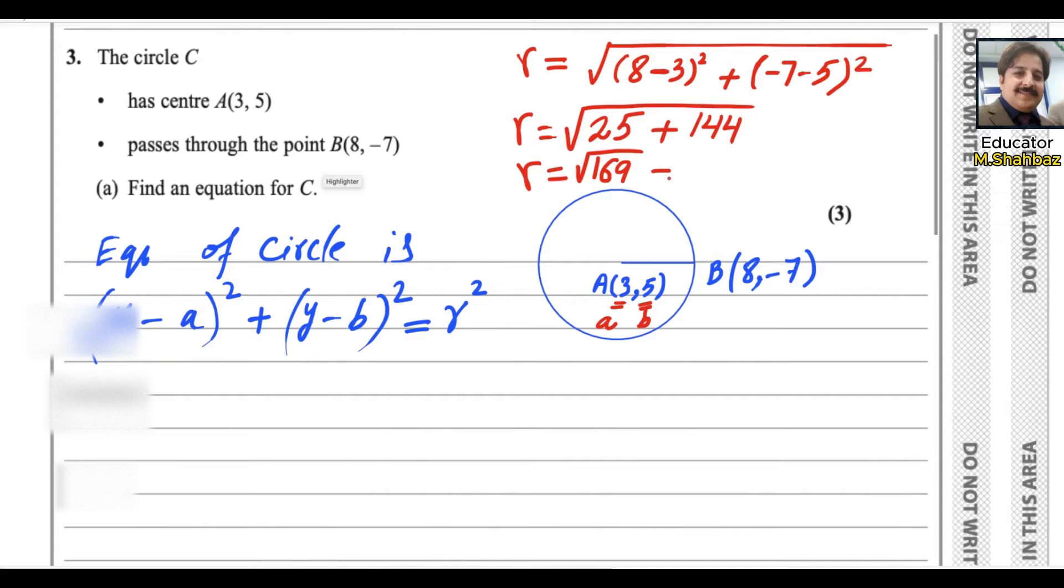If you take the square root of 169 it will be 13. So now substitute the values: (x-3)² + (y-5)².